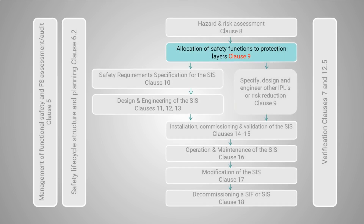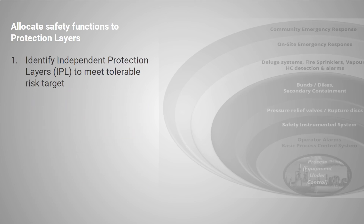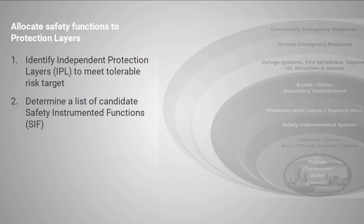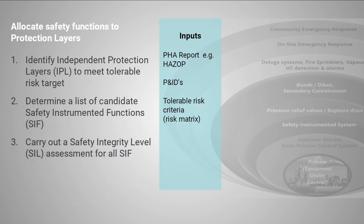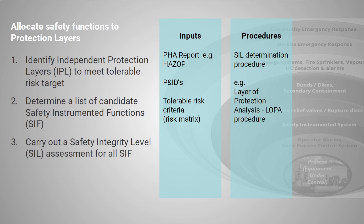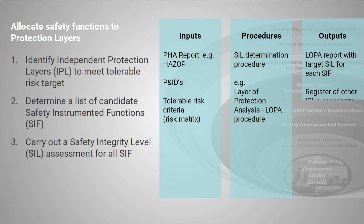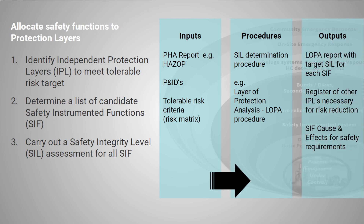After hazards and safeguards have been identified, there needs to be some further analysis of risk reduction measures. An effective technique for this is LOPA, Layer of Protection Analysis. This can allocate risk reduction to different layers, considering active and passive measures, and can eventually result in selecting SIL for functions within the SIS.